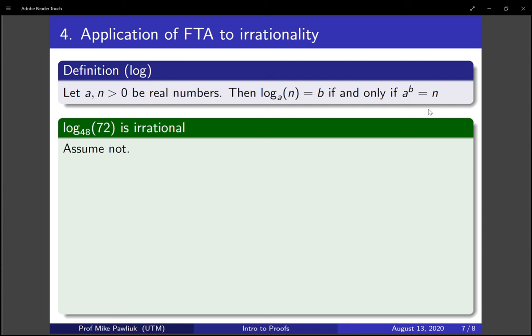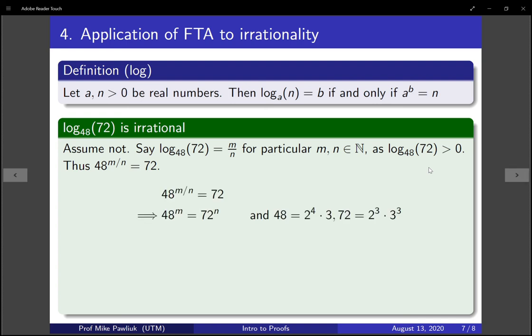This will again be a proof by contradiction. So, assume that log base 48 of 72 is rational. So, this means that it can be written as a natural over a natural. Well, wait a second. Shouldn't the top one be an integer? Why is it that I can assume that both of these are natural numbers and are both positive? Well, we do need to know one thing about log base 48 of 72. It's that we know that this is going to be a positive number, and it's positive because we know that we have to raise 48 to some positive power to get 72. If we raised 48 to a negative power, we would get smaller than 48. So, we know that m and n have to both be naturals. Okay, so what does this mean? It means that, by definition, 48 to the m over n is 72. Now, let's take both to the nth power. So, that tells us that 48 to the m is 72 to the n, because we raised both of these to the nth power.